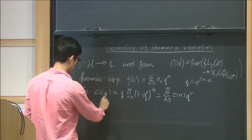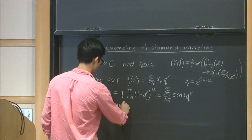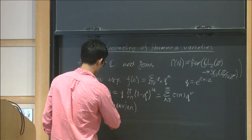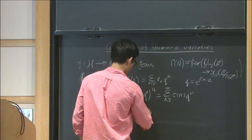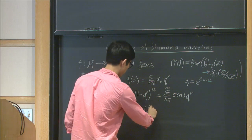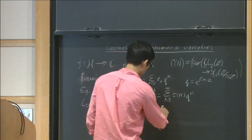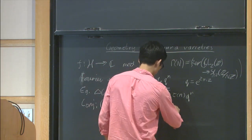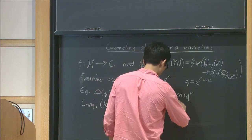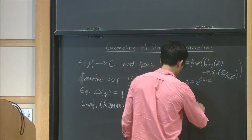Ramanujan conjectured that these coefficients satisfy the following property, the following bounds, so he conjectured that the absolute value was less than or equal to 2p^(11/2) for all primes p.